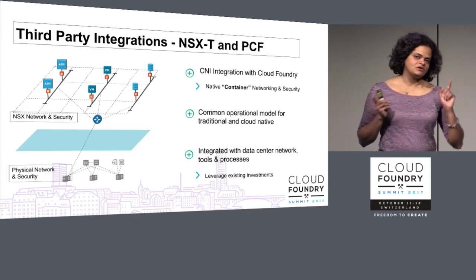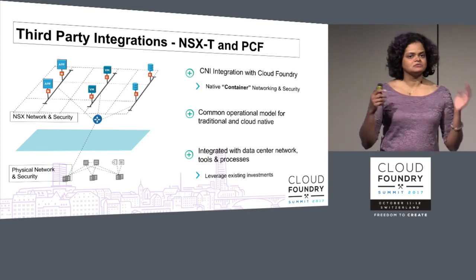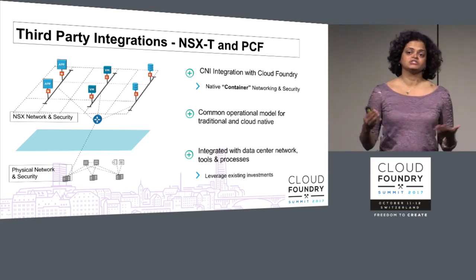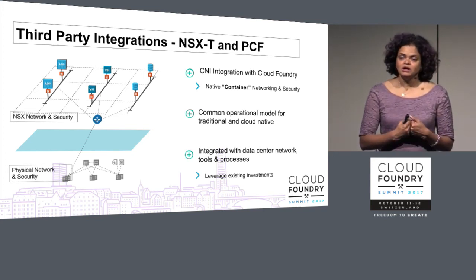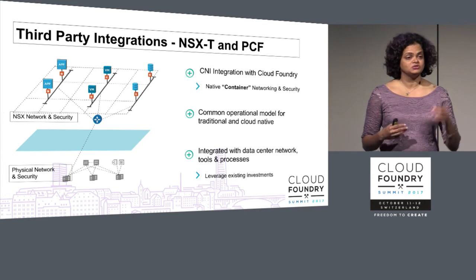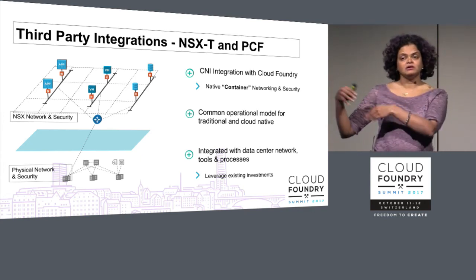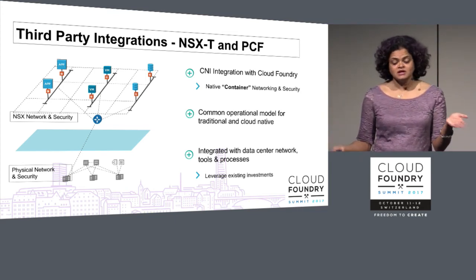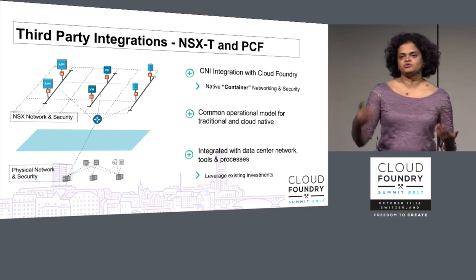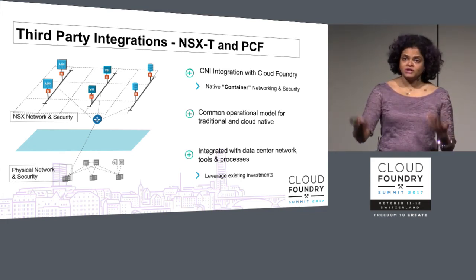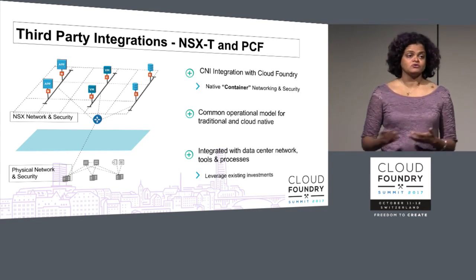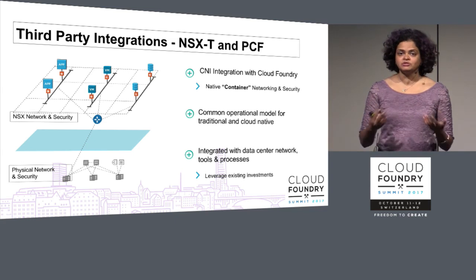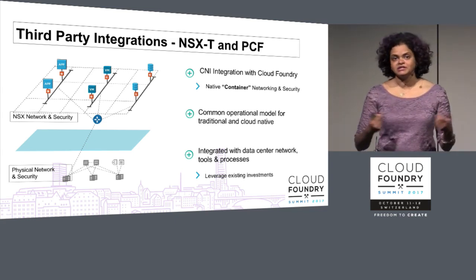On third-party integrations: this is specifically about an integration between Pivotal Cloud Foundry and NSX-T, but the idea is that any third party can hook into Cloud Foundry. The benefits include native container networking on an existing SDN solution and a common operating model for traditional and cloud-native apps without redoing existing processes. NSX-T is one integration underway, and others like Cisco ACI and Calico are possible — anyone with a CNI plugin can use our CNI hooks to integrate with Cloud Foundry.